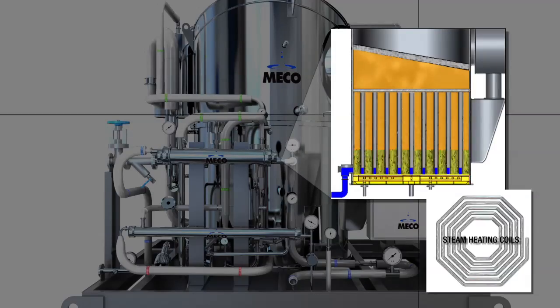Steam heating coils in the bottom of the evaporator further heat the water, causing it to percolate and boil up through the evaporator tubes, converting feed water to vapor.